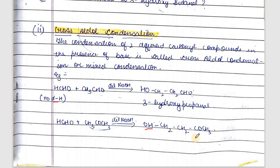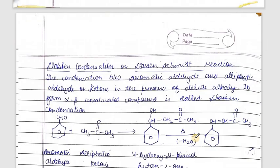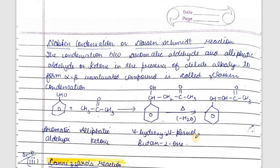We can easily write the reactions for aldol and cross aldol condensation. In cross aldol condensation, if the condensation is between an aromatic aldehyde and an aliphatic aldehyde or ketone in the presence of alkali, then the reaction is called Claisen condensation or Claisen-Schmidt reaction. This condensation between an aromatic aldehyde and an aliphatic aldehyde or ketone in the presence of dilute alkali forms an alpha-beta unsaturated compound.